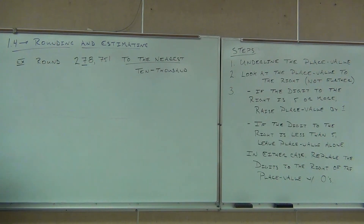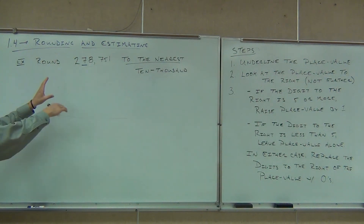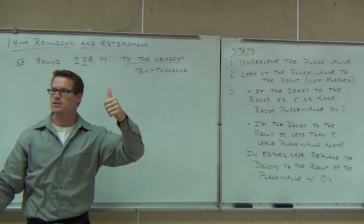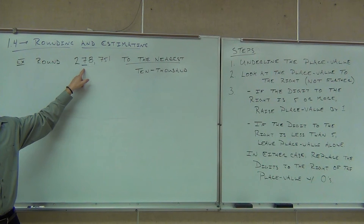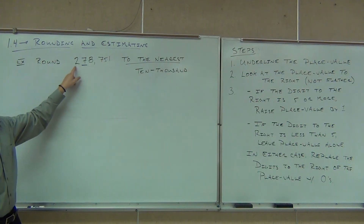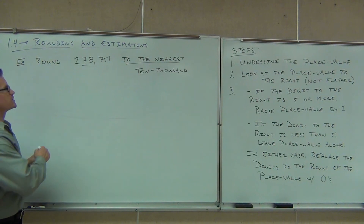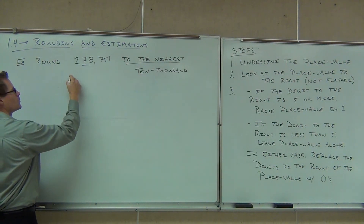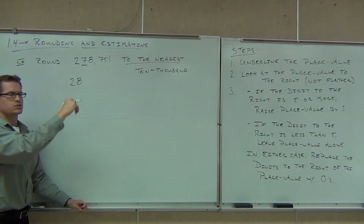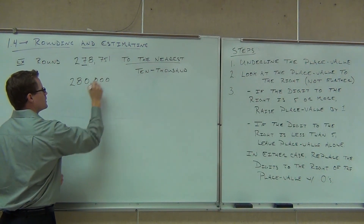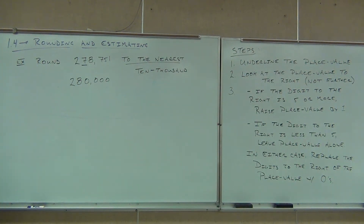Okay, let's give this a try for real. We've already underlined the 10,000s place value and we look at the digit to the right. If it's 5 or more, raise it up; if it's less than 5, leave it alone. The digit to the right is 8, which is more than 5, so we raise the 7 up. The 2 stays the same, then we write 8, and follow with all zeros. And that's appropriately rounded. We're going to try a whole bunch more rounding.